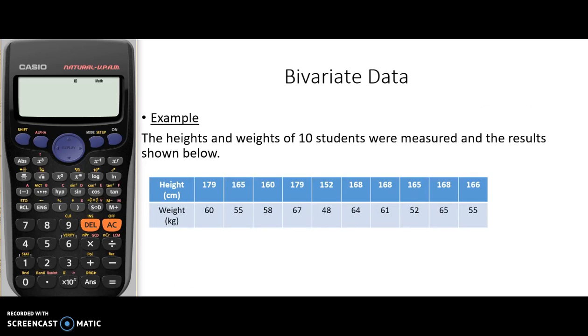So we have our Casio calculator. First, we're going to press mode and go to statistics. You'll notice up here that we've got A plus BX - that is our bivariate data. We're going to select 2, and we get our two columns for our first set of data, which will be our heights, and our second set, which will be our weights.